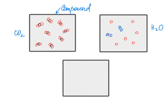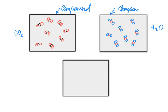Now let's deal with water. I will use red circles to represent oxygen and blue circles to represent hydrogen connected to it. All molecules inside this box are the same — of the same kind with the same composition. That means inside this box I have a pure substance: it's water. And inside the previous box I have a pure substance: it is carbon dioxide.